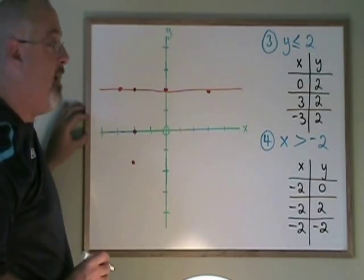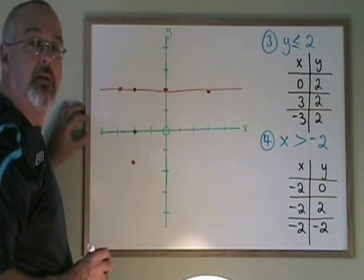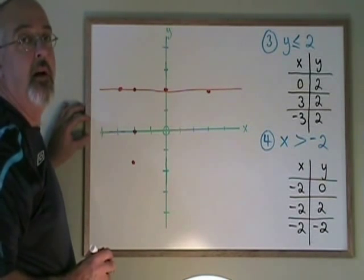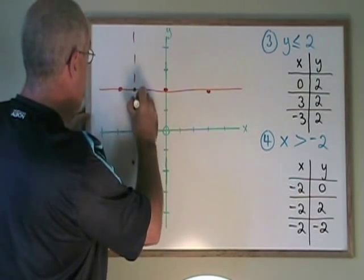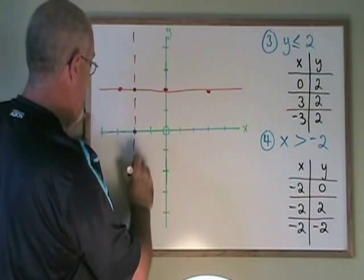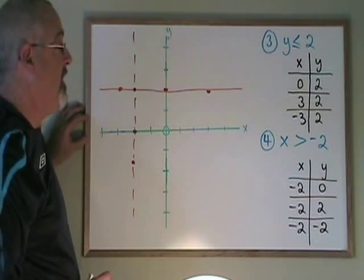I'm ready to draw my line. But I see the symbol is greater than. It does not have the extra or equal to line. So I have to draw a line to make it clear that the points on the line are not part of the answer this time.